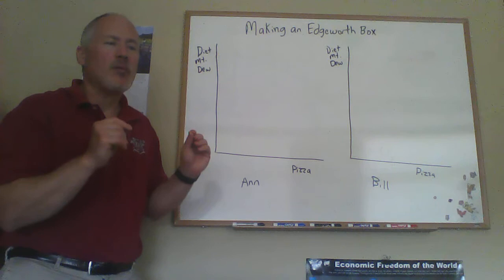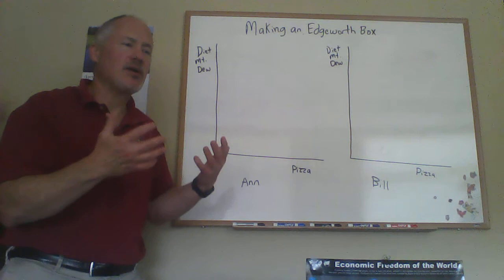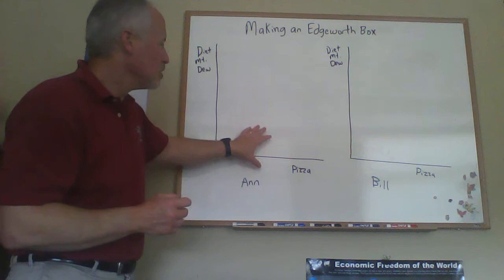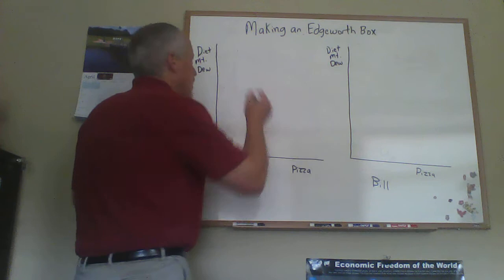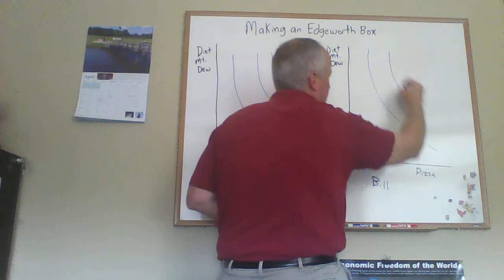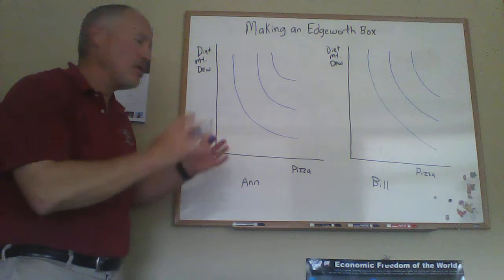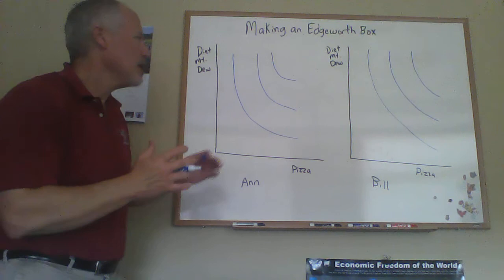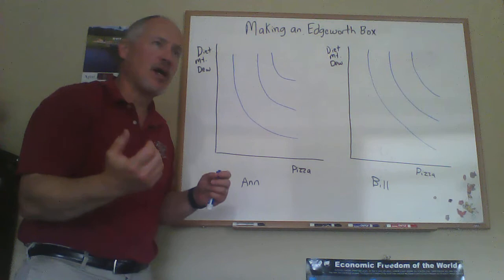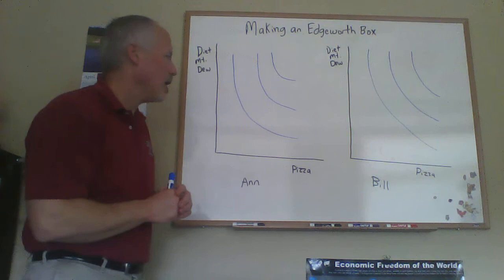We're not going to have any production occurring in this model, but we are going to eventually be able to use the Edgeworth box to think about competitive equilibrium and define something as Pareto efficiency, which is a very powerful concept. First we've got to figure out how to make the box. We have diagrams for two different people — we could have indifference curves — let's not worry about a budget line yet. We have indifference curves for Ann, and then some that are a little differently sloped for Bill. This is a two-person, two-good, pure exchange economy — a very simple economy, but the box is very powerful for helping us see what's going on.